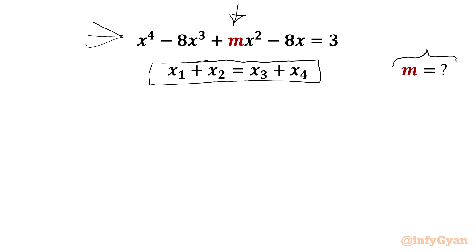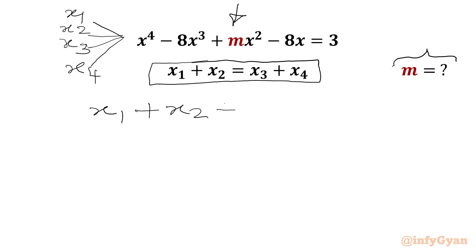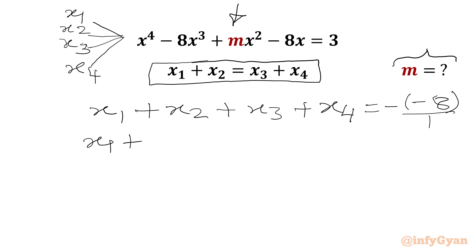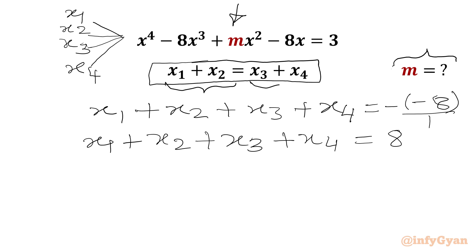I will write here the roots of the quartic equation: x1, x2, x3, and x4. Now we can use Vieta's method and write the sum of roots formula. So x1 plus x2 plus x3 plus x4 will be equal to minus B over A, which is minus of minus 8 over 1. So x1 plus x2 plus x3 plus x4 equals 8. Now given that x1 plus x2 equals x3 plus x4.